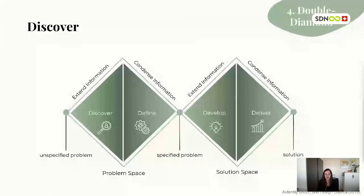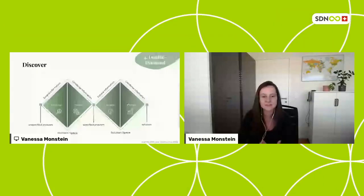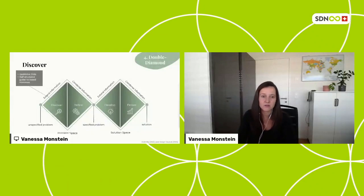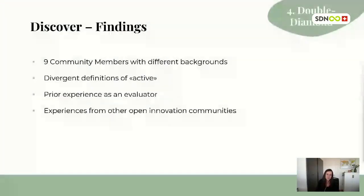Some of you might know the Double Diamond process. The Double Diamond is divided into four phases: discover, define, develop, and deliver. The first phase involves conducting research to better understand the problem and the target audience. To achieve that, qualitative data was collected through interviews. In total, nine interviews were conducted with members of the InnoLab Graubünden community, all with different backgrounds and experiences.